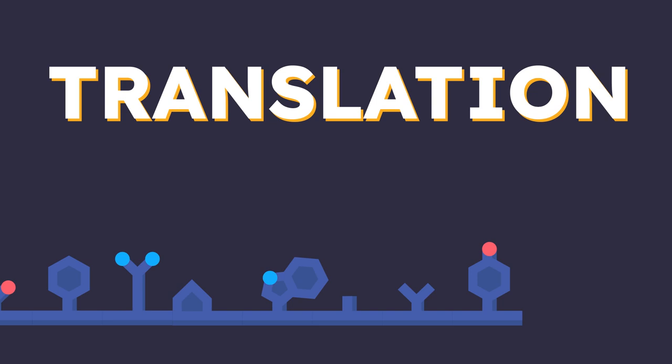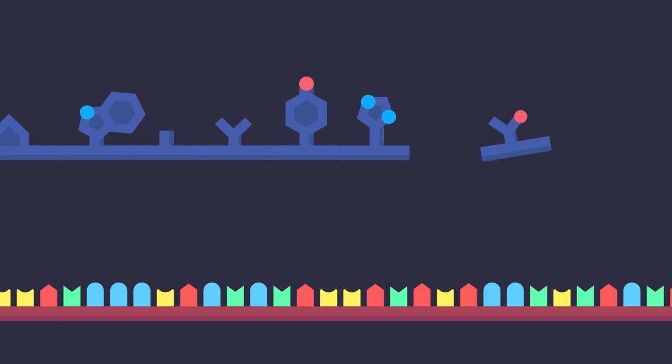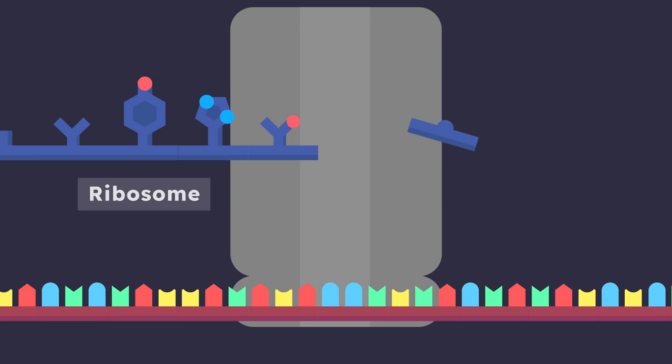Protein is made of amino acids, but the instructions, mRNA, are made of bases. It's the same information in different languages. So, to translate, the ribosome adds one amino acid for every three bases, called a codon.